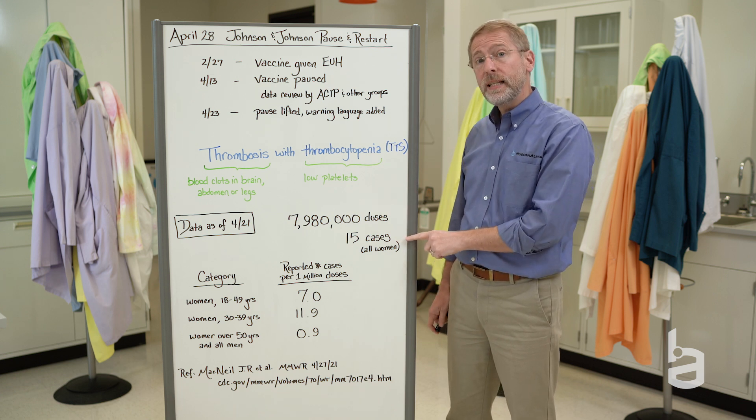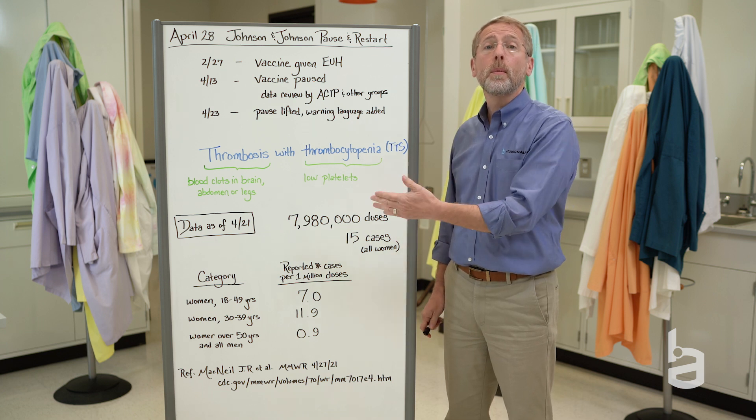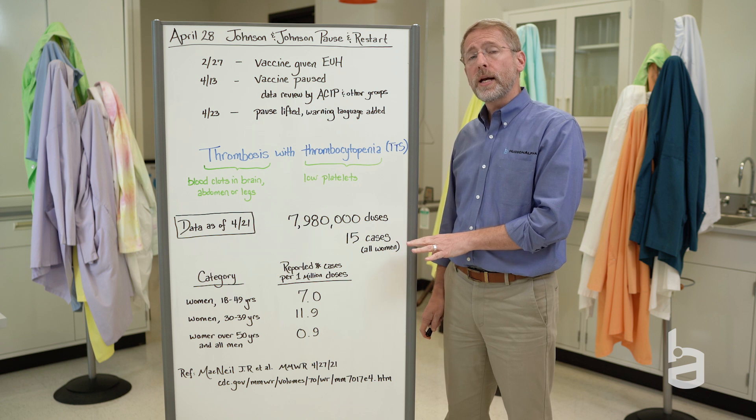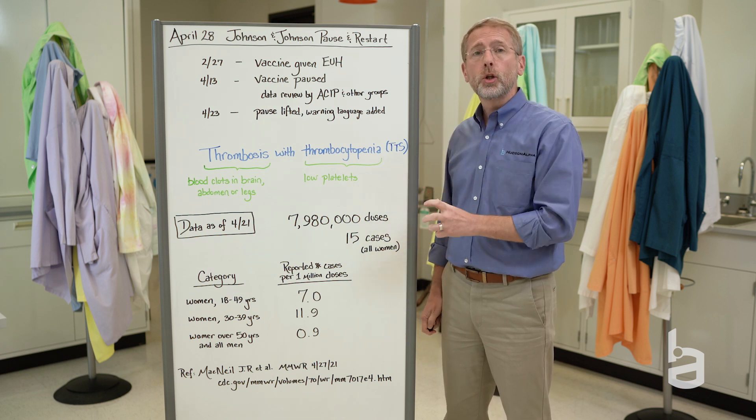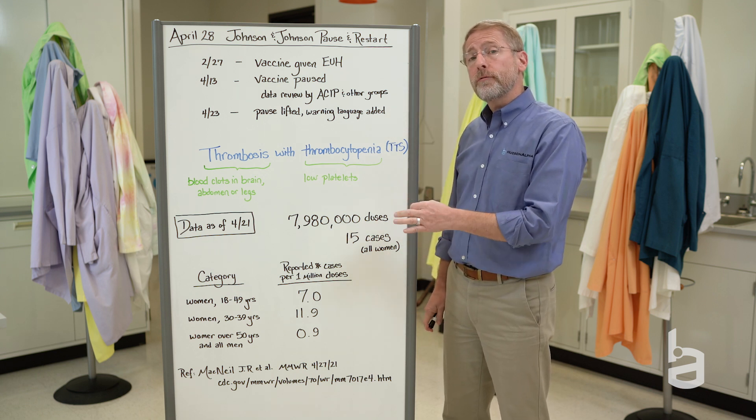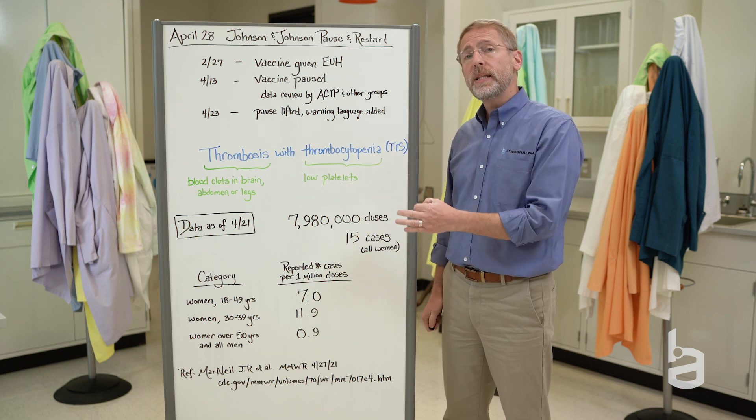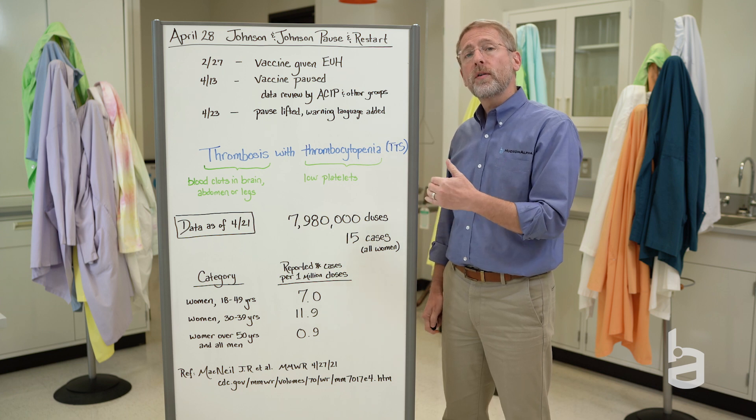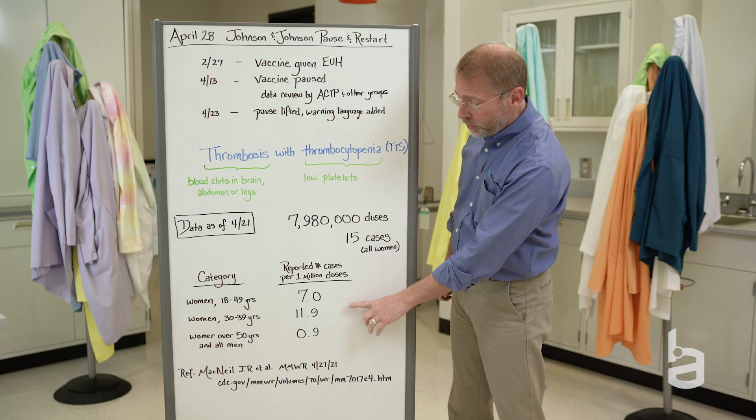So 15 cases out of almost 8 million, 15 cases out of 4 million doses for women. That's a small number. So this is really rare, but it is serious, which is why everything paused to look at the data. You can actually look at the different age groups of the individuals that were vaccinated and you can determine per million cases of vaccination in those age groups what were the frequencies of seeing TTS.